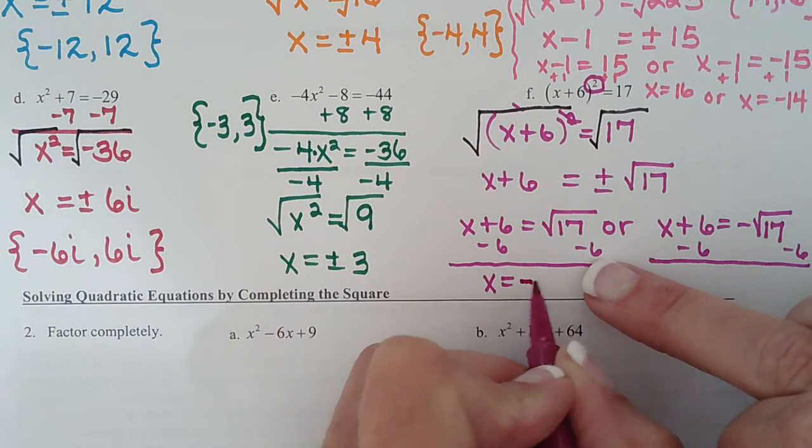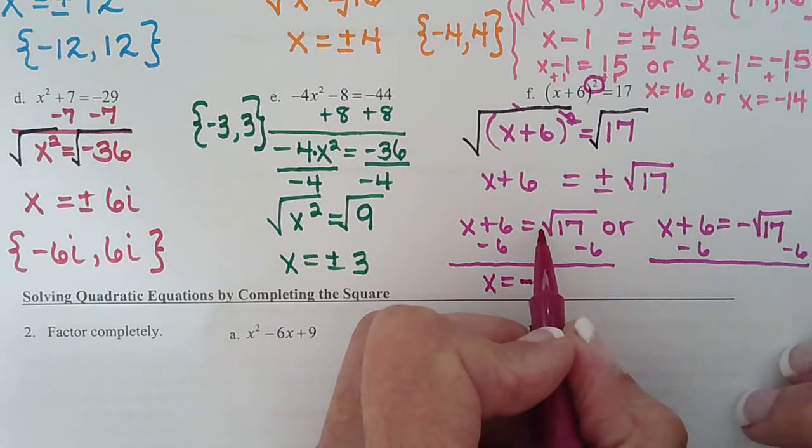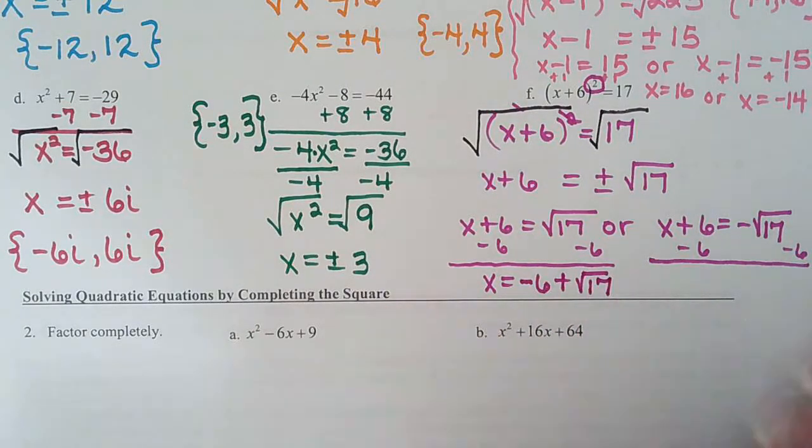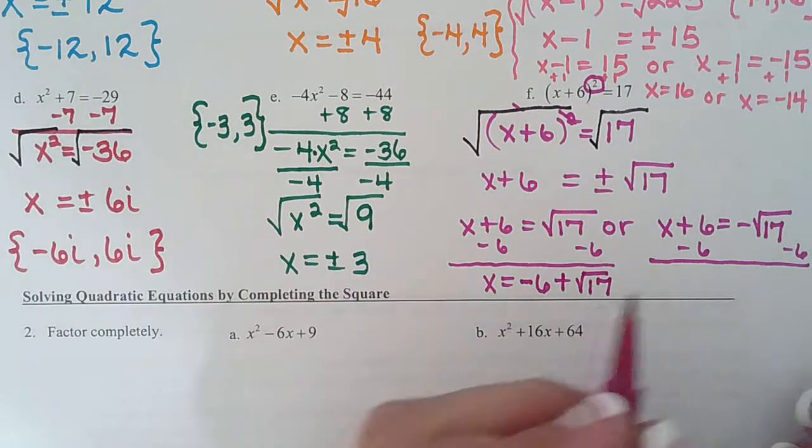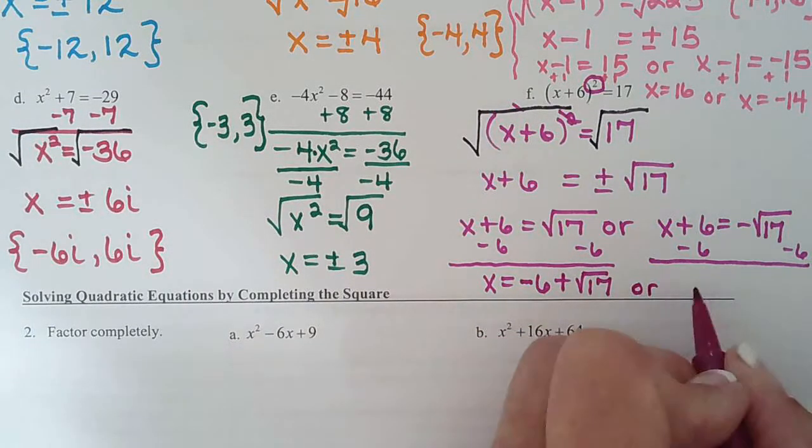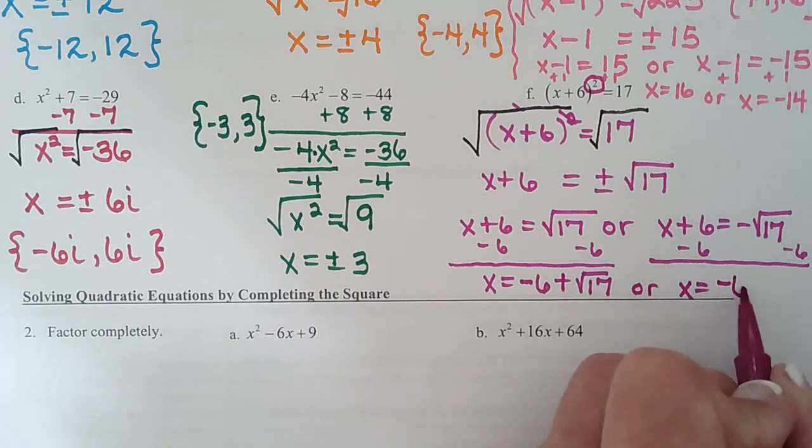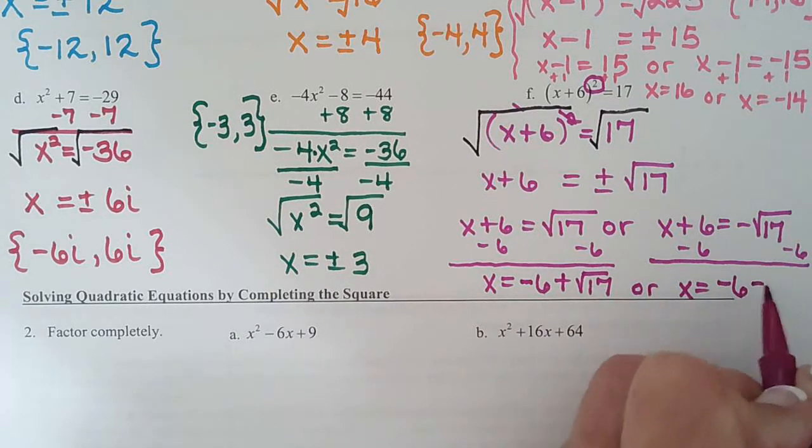Keep the sign with it, negative 6, and then this one was positive radical 17. So that's your first solution. Your second solution is going to be x equals negative 6 minus radical 17.